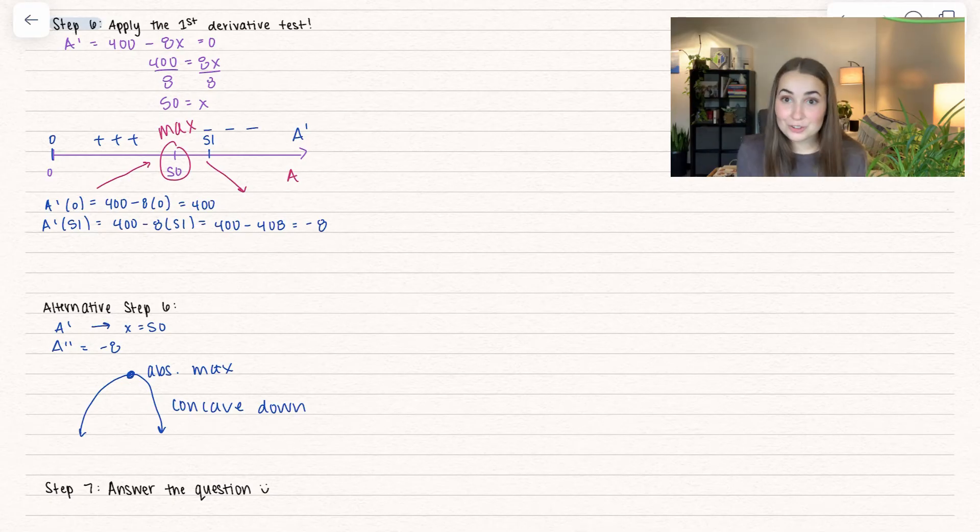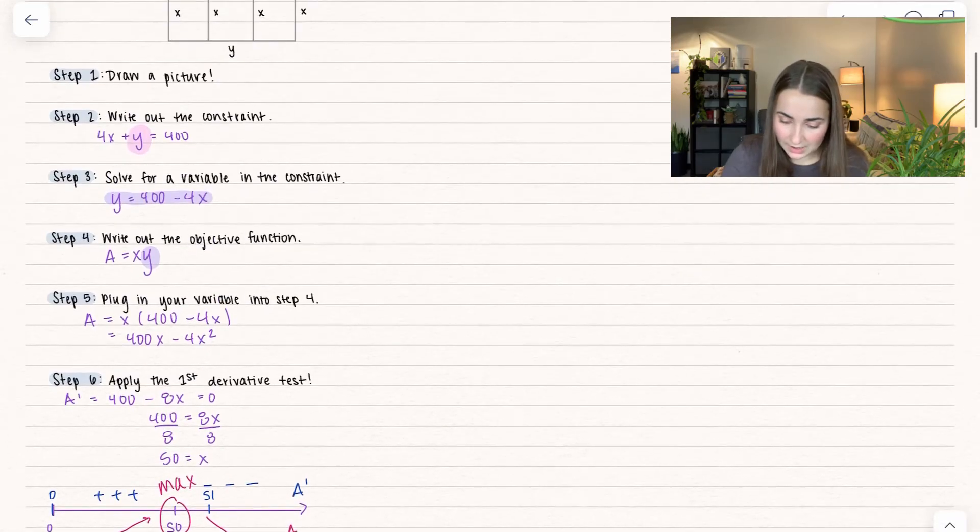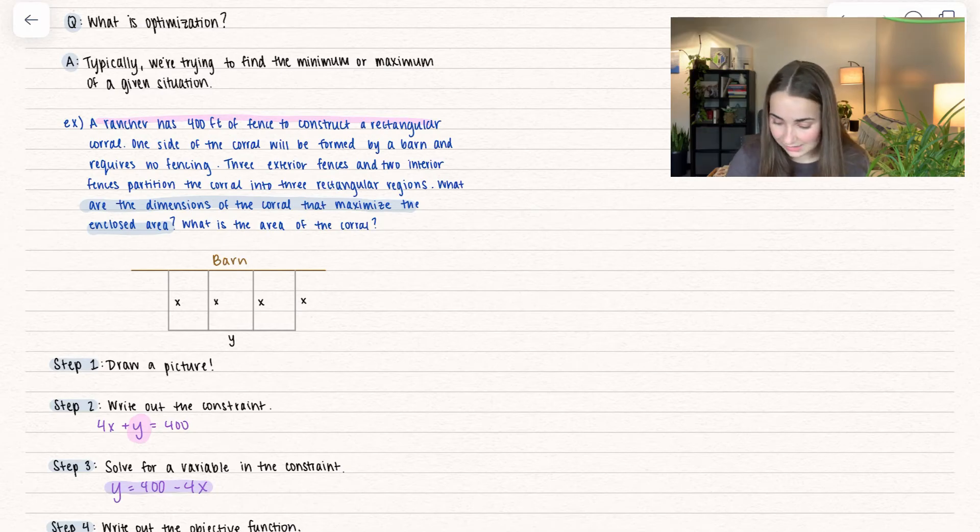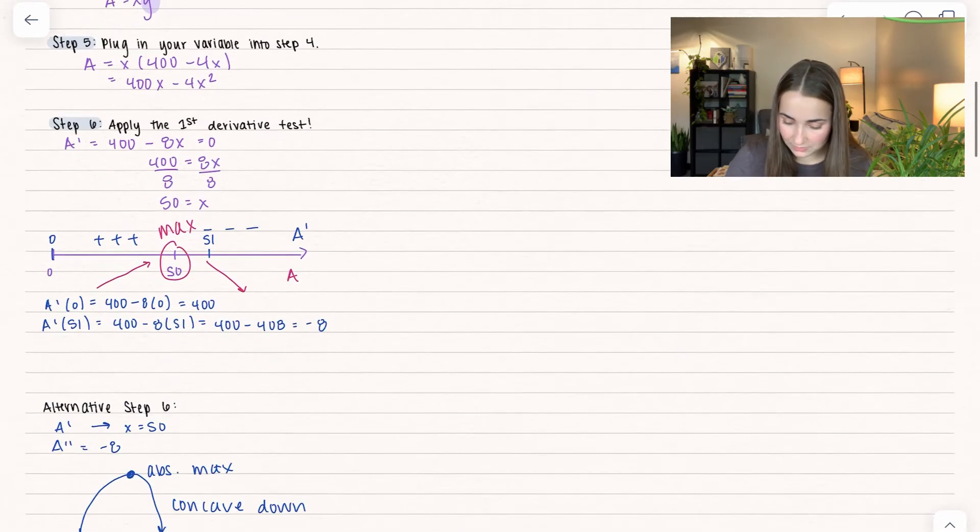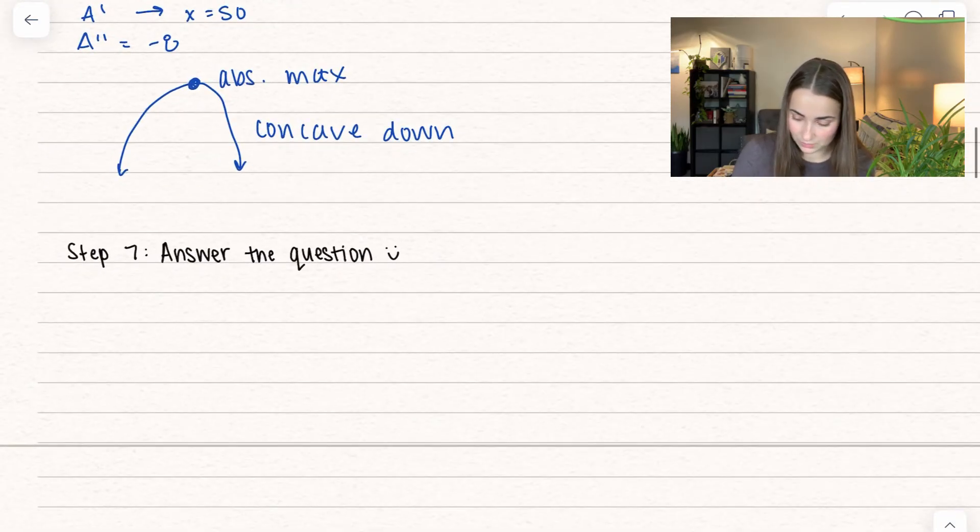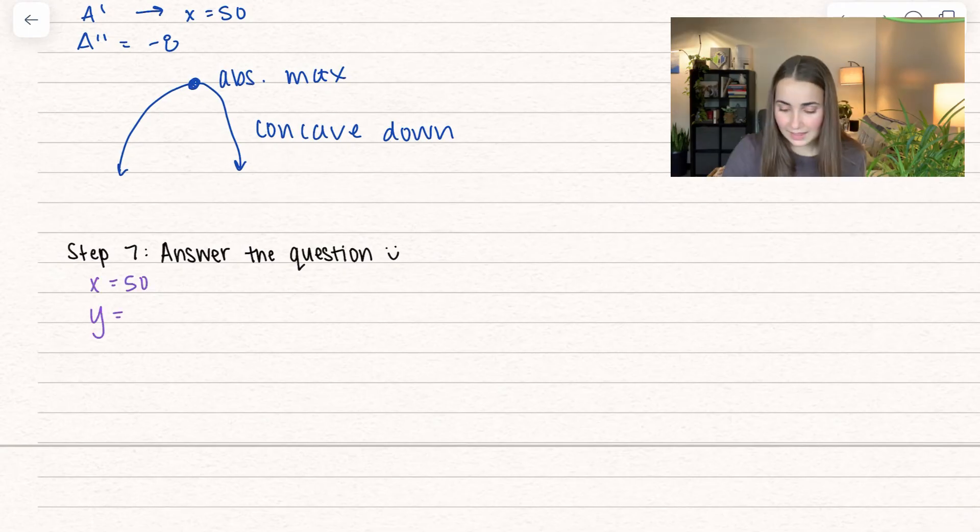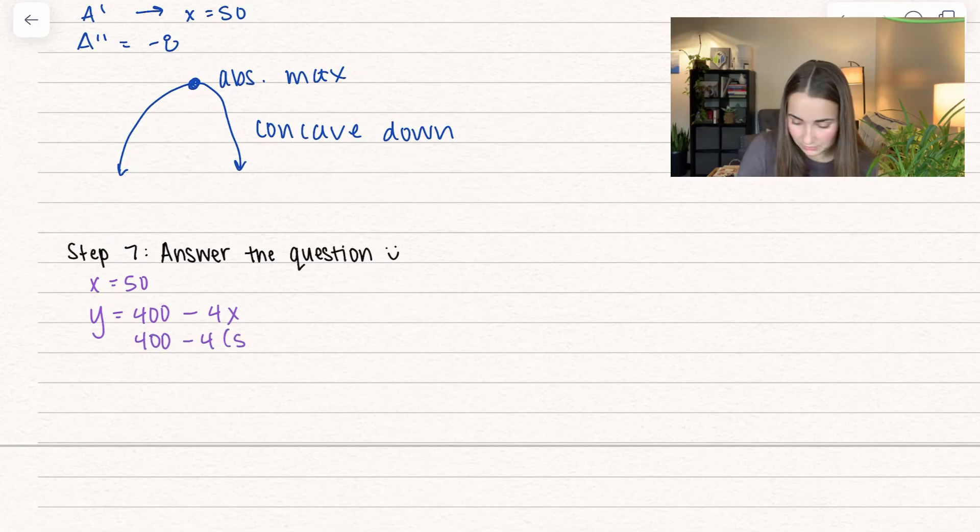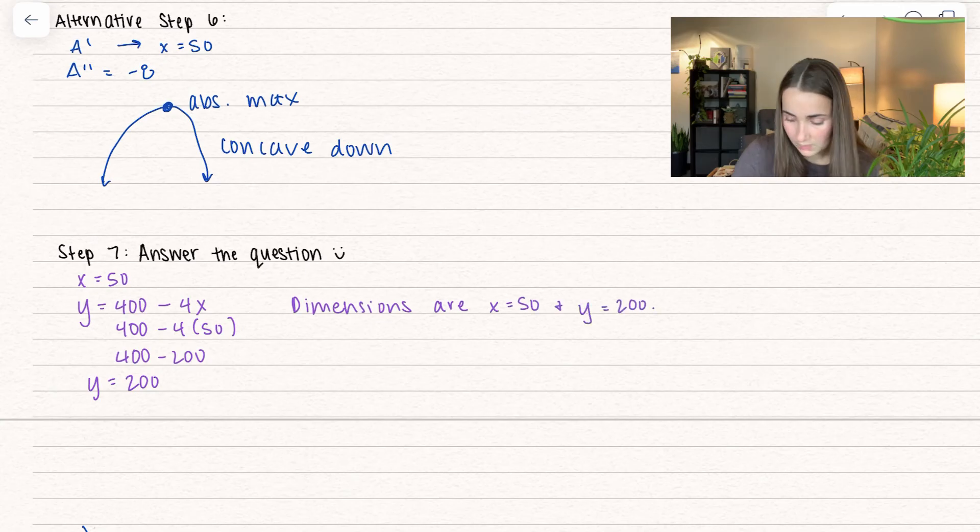Now our last step is to answer the actual question. We're trying to find the dimensions of the corral that maximize the enclosed area, and don't forget the second part - what is the area of the corral? We already found X equals 50, but now we need our corresponding Y value. We had solved for Y originally: Y equals 400 minus 4X. Let's plug in our X value. We get 400 minus 4 times 50, which equals 400 minus 200, and we get Y equals 200.